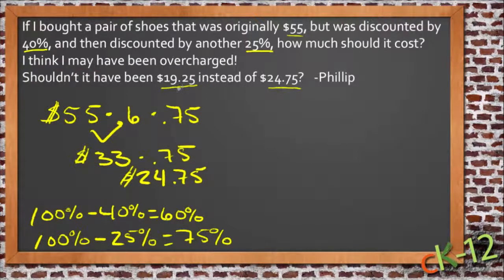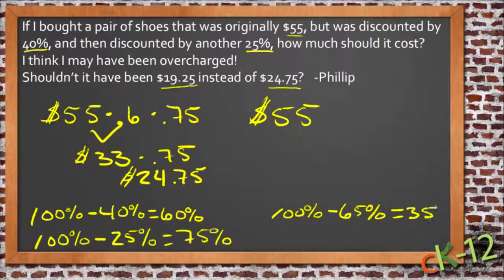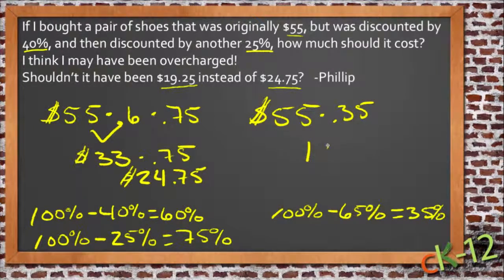Looks like that was the right price. Now let's see if we can figure out why it came up $19.25 when you calculated it. If it was originally $55, and you were thinking that it was discounted by 40% and 25%, which would be 65%, then you would say you had your original price — 100% — and you discounted 65%, then you should only be paying 35%. Let's see: $55 times 0.35 — let's run that through a calculator — $19.25. That's exactly what happened.